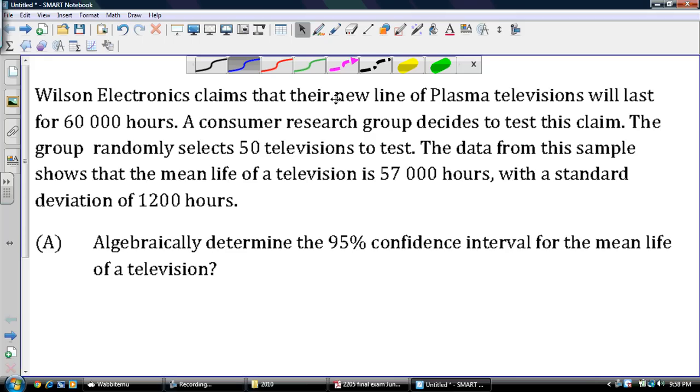Wilson Electronics claims that their new line of plasma televisions will last for 60,000 hours. A consumer research group decides to test that claim and they randomly select 50 televisions to test. The data from the sample shows that the mean life of a television is 57,000 hours with a standard deviation of 1,200 hours. Part A asks us to determine a 95% confidence interval for the mean life of a television.